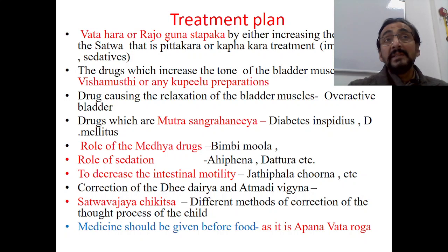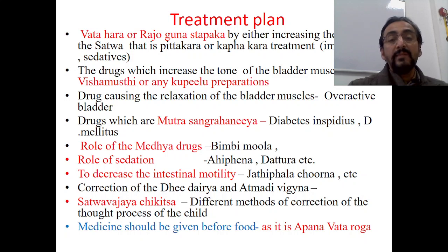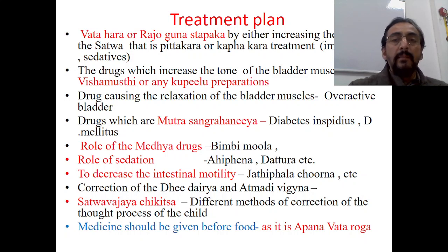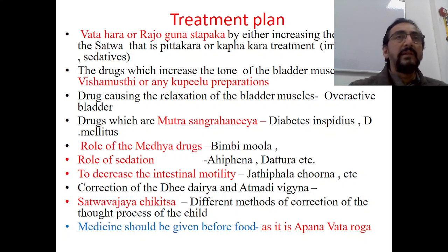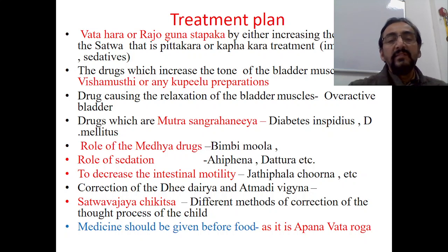To decrease intestinal motility, Jatifalachuna is indicated. In case of constipation, treatment should follow virechanopaka or anulomana drugs. Next, we have to correct Dhi, Dhairiya, and Atma Dhivijjana — that is, building up confidence through positive reinforcement — by increasing the Dhi, Dhairiya, and Atma Dhivijjana of the child.